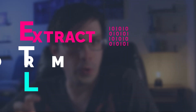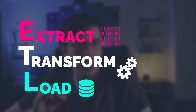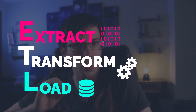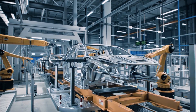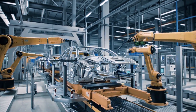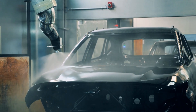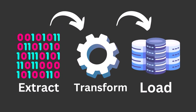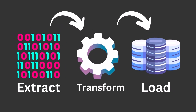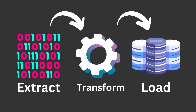ETL stands for Extract, Transform, and Load. Just as an assembly line takes raw resources, builds it into a car, and then delivers it to some final point, ETL processes raw data, transforms it in some way, and then delivers it somewhere. There could be few steps, or there could be many steps.